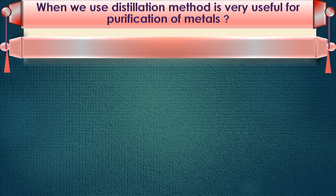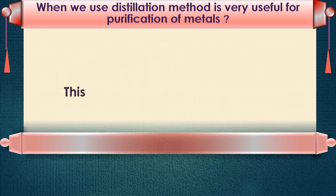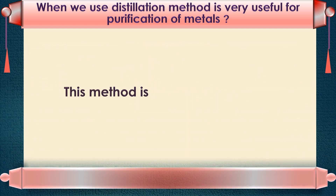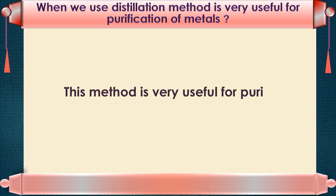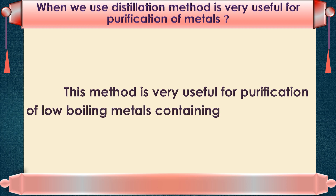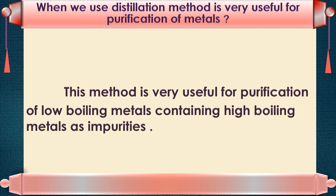When is the distillation method used? The distillation method is very useful for purification of low boiling metals containing high boiling impurities. Zinc and mercury are examples of low boiling metals purified this way.